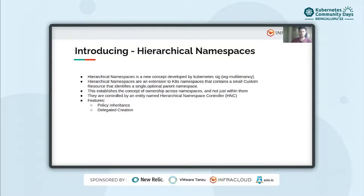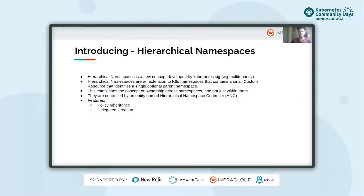Hierarchical namespaces also introduce the concept of a sub-namespace — a child of another namespace with its life cycle bound to that of its parent. Instead of cluster-level permissions, users only need narrow permissions in the parent namespace to create sub-namespaces. Any namespace that isn't a sub-namespace is a full namespace, which is the traditional Kubernetes namespace. Creating full namespaces requires cluster-level privileges, closely guarded by the cluster administrator. The sub-namespace feature can be utilized by granting individual teams a narrow set of permissions.